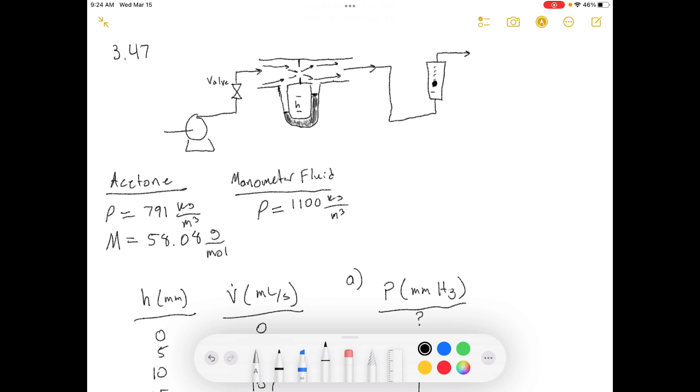Today, we're working out of Elementary Principles of Chemical Processes 3rd Edition, and we're doing problem number 3.47. I'll read the problem statement. An orifice meter (see figure 3.2-1) is to be calibrated for the measurement of the flow rate of a stream of liquid acetone. The differential manometer fluid has a specific gravity of 1.10. Then they give a diagram, which I've replicated over here.